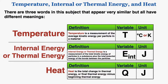There are three words in the subject that appear very similar but all have different meanings: temperature, internal energy (or thermal energy), and heat. Temperature is a measurement of the average kinetic energy per particle in a material; its variable is capital T and we measure it in degrees Celsius or Kelvin. Internal energy is a measurement of the total kinetic energy of particles in a substance plus the total potential energy of the bonds between the particles; its variable is E_int and the unit is joules. Heat is the total change in thermal energy — final thermal energy minus beginning thermal energy — symbolized by capital Q, also measured in joules.